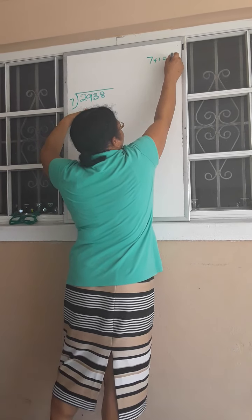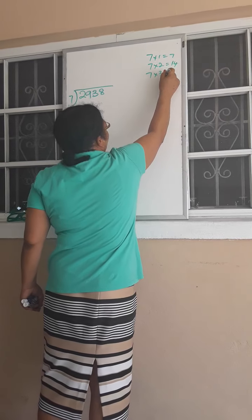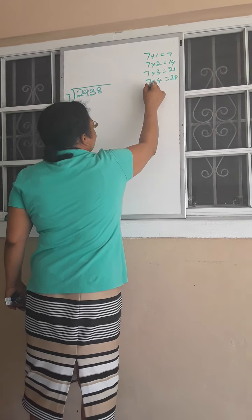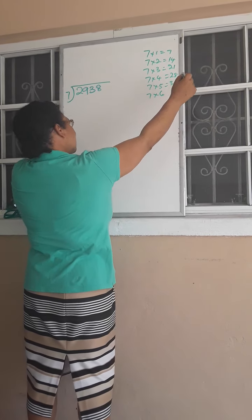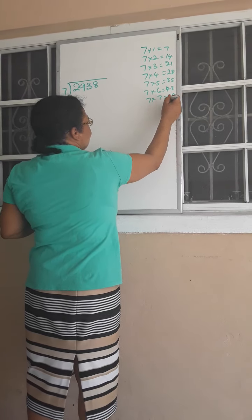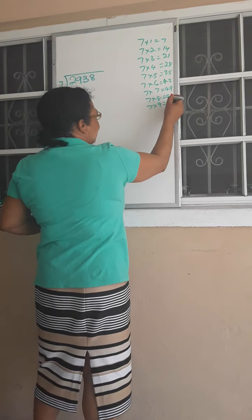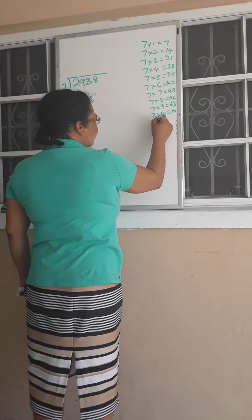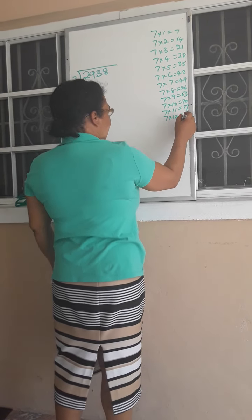7 times 1 equals 7. 7 times 2 equals 14. 7 times 3 equals 21. 7 times 4 equals 28. 7 times 5 equals 35. 7 times 6 equals 42. 7 times 7 equals 49. 7 times 8 equals 56. 7 times 9 equals 63. 7 times 10 equals 70.